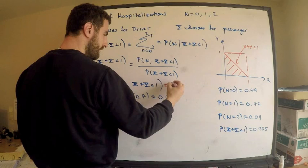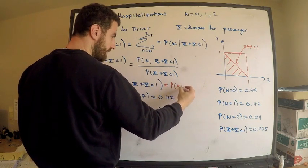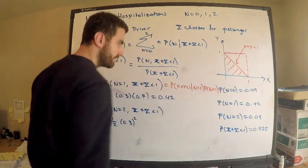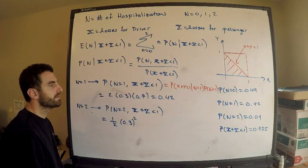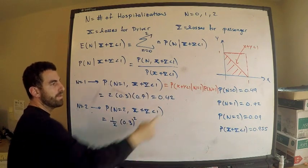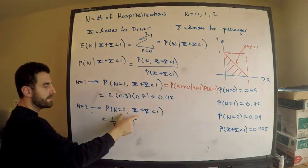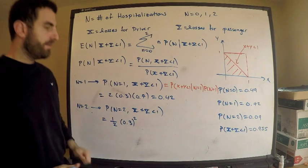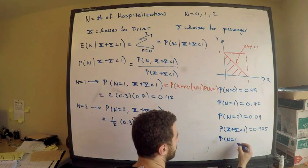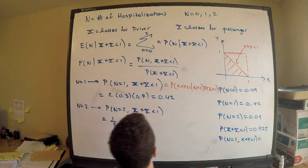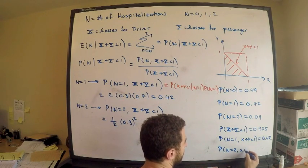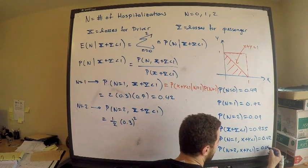We already computed these using the definition of conditional probability. Let me record everything: probability N equals 1 AND total loss less than 1 is 0.42. Probability N equals 2 AND total loss less than 1 is 0.09 over 2.